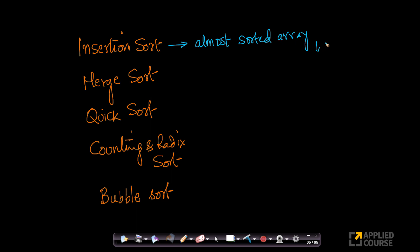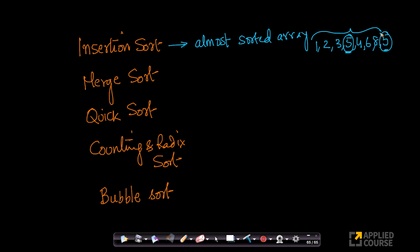For example, imagine if I have an array like this: 1, 2, 3, 5, 4, 6, 8, 5. This is almost sorted — except for this element and this element, everything else is in its right place.